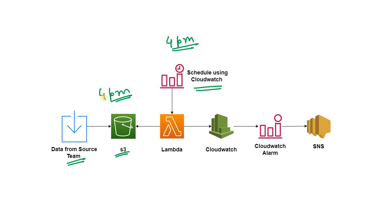One thing that makes this architecture different from normal architecture is that mostly we trigger Lambda from S3. But in this case we want to check at a particular time whether the data is available in S3. So Lambda cannot be triggered from S3; instead Lambda will be triggered from CloudWatch, and then it will check whether data is available in the S3 latest partition at the expected time. That is one very important point with respect to this architecture.